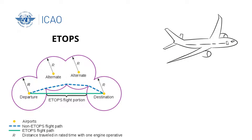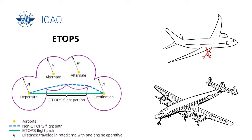ICAO coined the acronym ETOPS for two-engine aircraft operation further than one hour from a diversion airport, at one engine inoperative cruise speed, over water or lengthy en-route segments which were previously restricted to three or four engine aircraft. ICAO then replaced ETOPS with EDTO, with the main reason being to better reflect the scope and applicability of the new standards.